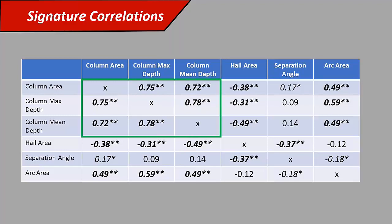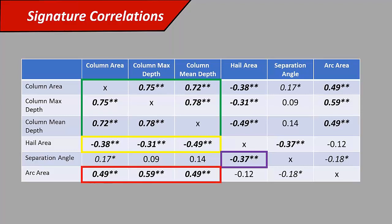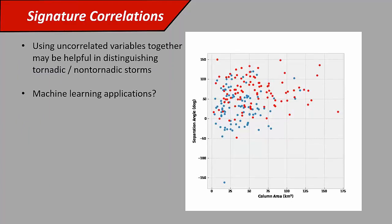The captain obvious result is that column area is pretty well correlated with column depth. Larger columns are more likely to be deep, and vice versa. Hail area correlates negatively with pretty much all of the column variables. If you have a larger and deeper ZDR column, you're more likely to have smaller areas of hailfall, which makes sense because having a lot of hail in the updraft that then falls out may also be masking out some of the ZDR column on radar. Separation angle didn't really correlate to much besides hailfall area, which was interesting, modest negative correlation. And finally, arc area tended to be positively correlated to ZDR column area and depth. If you have a larger, deeper ZDR column, you're more likely to have a larger ZDR arc.